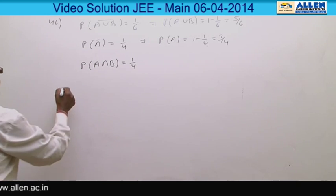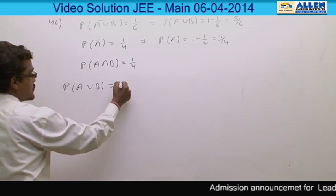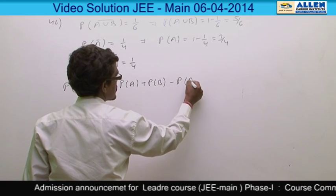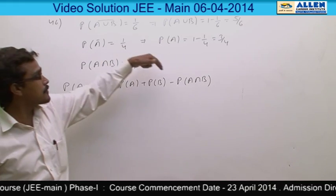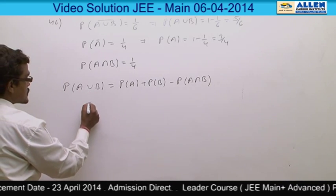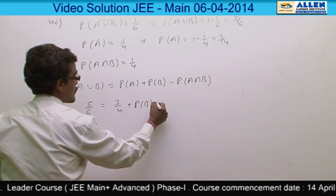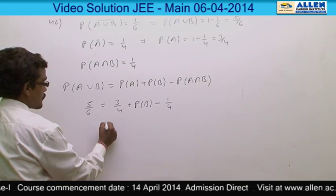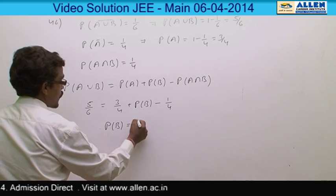Using P(A∪B) = P(A) + P(B) - P(A∩B), and substituting P(A∪B) = 5/6, P(A) = 3/4, and P(A∩B) = 1/4, we solve to find P(B) = 1/3.